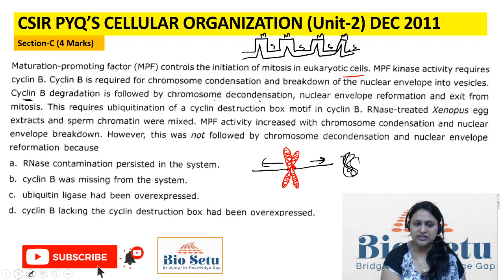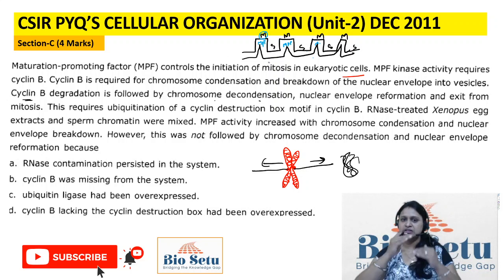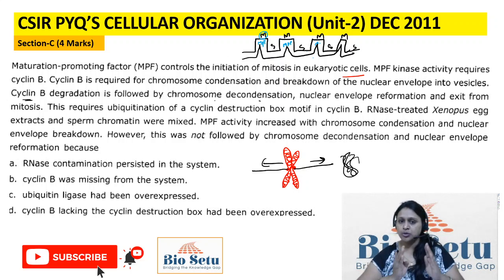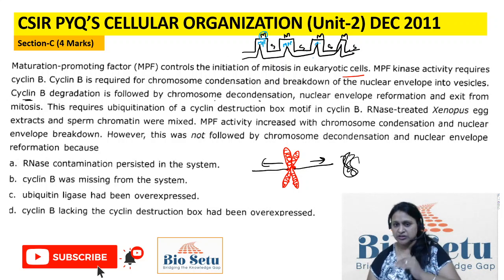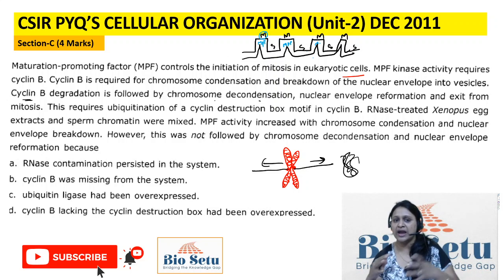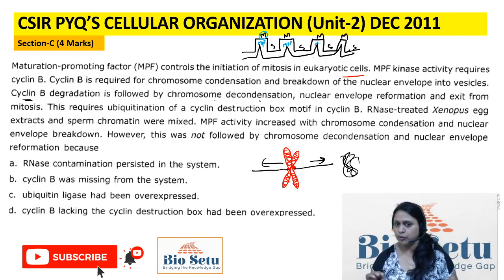When Maturation Promoting Factor is high, then M phase; when low, then S phase. When MPF is low, M phase ends, then S phase, then again M phase. Alternation of Maturation Promoting Factor — that is, Cyclin B degradation and reformation — drives M and S phase alternation. If Cyclin B is destroyed, then mitosis ends and S phase begins. Cyclin B destruction and MPF destruction is very important. This is what we know in embryonic development.